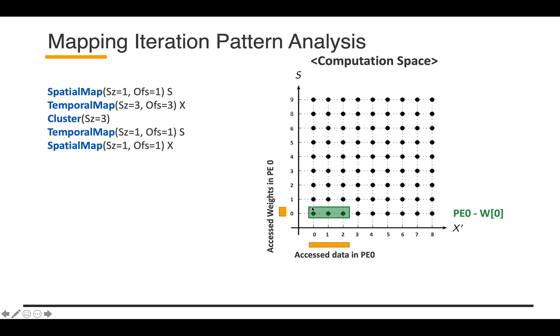In this diagram, each PE will have these three partial sums. To compute these partial sums, we need to access weight zero and output zero one two. Because we have three PEs and based on this mapping description, we are mapping partial sums in this way. Each of the PE accesses the corresponding data.